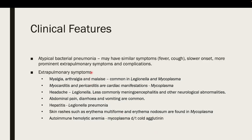The clinical features differ for atypical pneumonia. For atypical bacterial pneumonia, you have similar features like fever and cough, although it is slower onset, but with more prominent extra-pulmonary symptoms and complications. Extra-pulmonary symptoms include myalgia, arthralgia, and malaise — common in Legionella and Mycoplasma infections. You also have myocarditis and pericarditis as cardiac manifestations of Mycoplasma infection, as well as headache, which can lead to meningoencephalitis and other neurologic conditions.